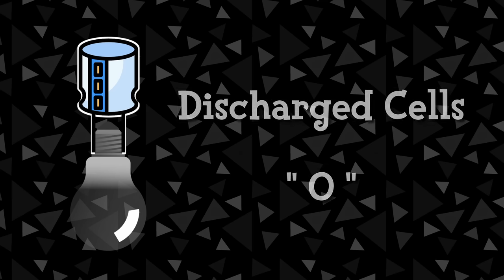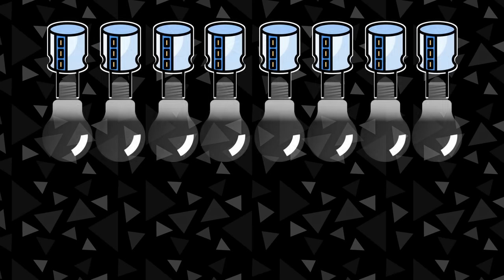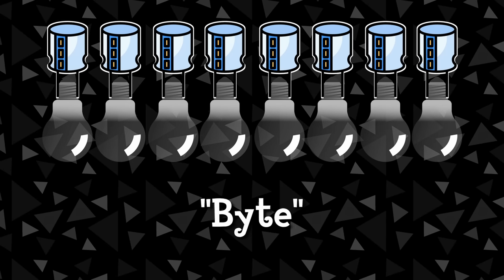In memory terms, each of these cells is called a bit, and 8 of these bits make up something called a byte — as in the things that make up a megabyte or a gigabyte, which you've probably heard of before.